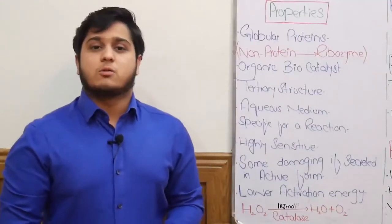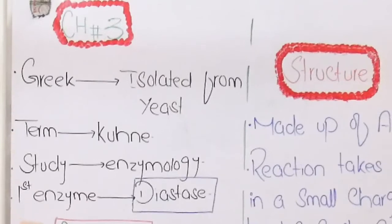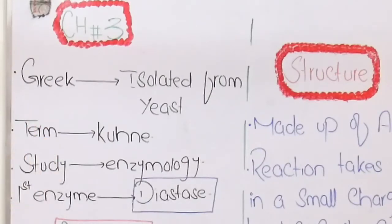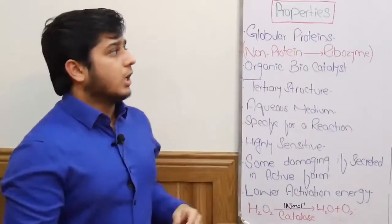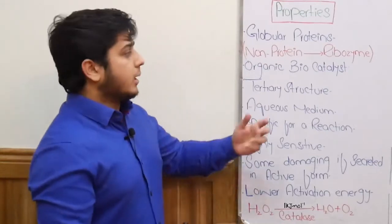Assalamu alaikum students. The next chapter we will discuss about enzymes. Enzymes were first isolated from yeast, which is a unicellular fungus. Enzymes are derived from a Greek language word, and this term was very first time introduced by a German physiologist known as Kühne. Enzyme study is called enzymology, and the first enzyme which was discovered was the diastase enzyme.